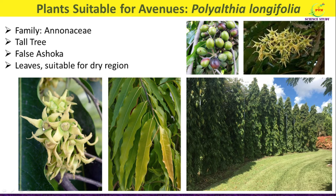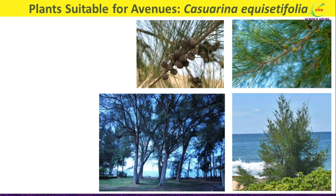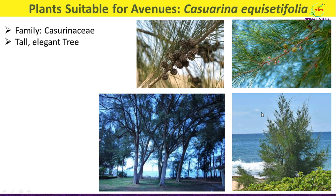Here you can see the flowers of Polyalthia longifolia, and these are the fruits of Polyalthia. Next is Casuarina equisetifolia, belonging to family Casuarinaceae. As you can see in this photograph, it is a tall elegant evergreen tree that appears like Pinus. The foliage consists of needle-like leaves, and these are the cones of Casuarina. Casuarina is often planted to control soil erosion and for afforesting sandy beaches.